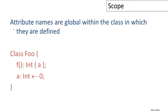Similarly, attribute names are global within the class in which they are defined, meaning they can be used before they are defined. You can define a method that uses attribute A and only later define what attribute A is — that is perfectly legal. Attribute and method definitions can come in any order within a class.